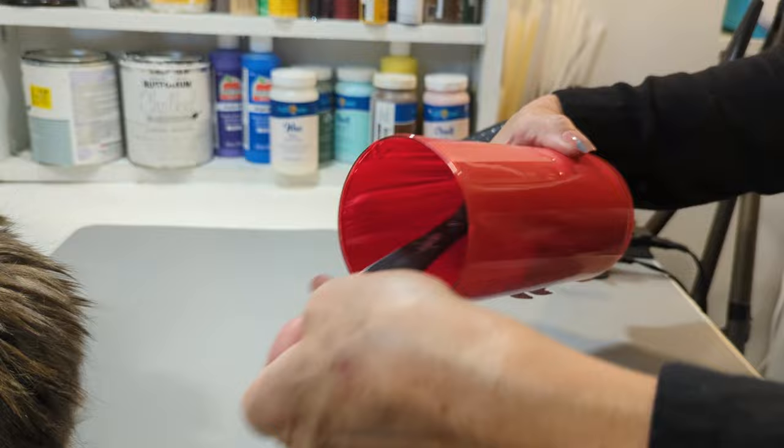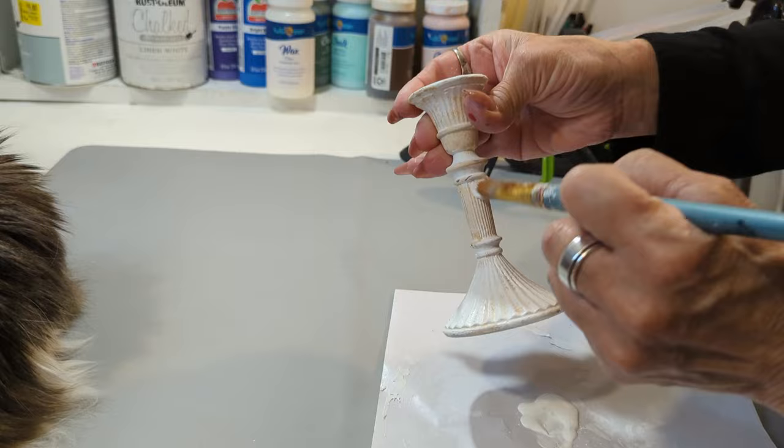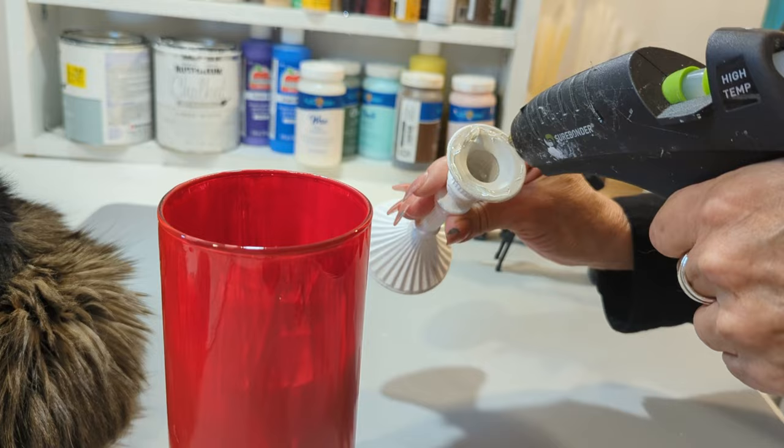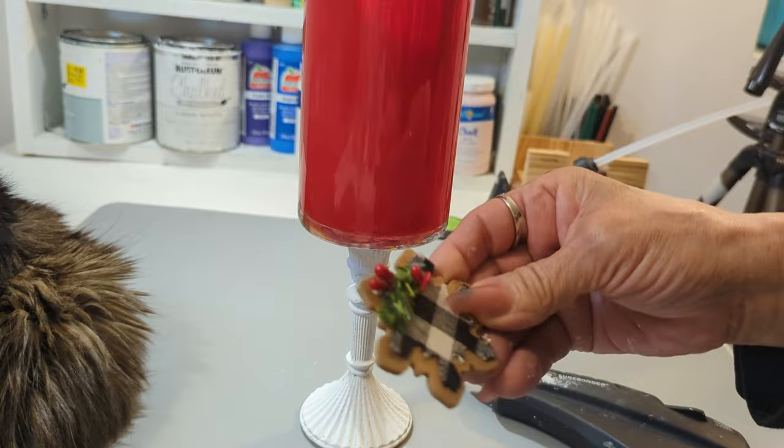Now I also have this candle holder that I'm recycling. I'm just going to go ahead and give it a light coat with white chalk paint. And then after I'm done with that, I'm going to go ahead and use plenty of hot glue. And these two pieces are going to go together. I also have two of these snowflakes and with some hot glue, I'm going to be gluing them on the cylinder.